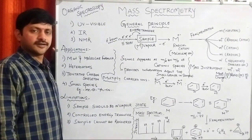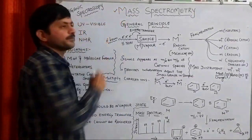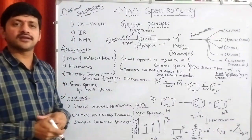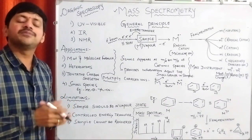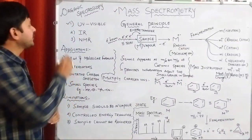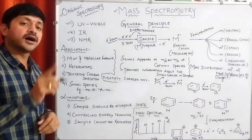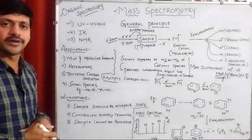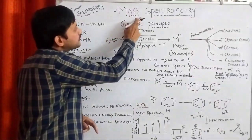Hello everyone, welcome back to our channel. Let's see the next concept, that is mass spectrometry. Organic spectroscopy is one of the interesting subjects in organic chemistry. In general, in organic spectroscopy we have four important units: ultraviolet-visible spectroscopy, infrared spectroscopy, NMR spectroscopy, and mass spectrometry. This is the last unit — mass spectrometry. The first three are spectroscopic techniques, but this one is spectrometry.